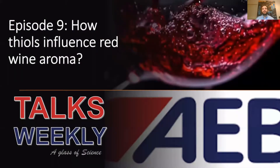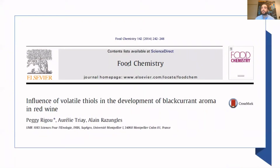Hi everybody, welcome to this new episode of IB Talk. This week we're going to discuss how varietal thiols influence the aromas of red wines. In particular, the article is titled 'Influence of Volatile Thiols in the Development of the Blackcurrant Aromas in Red Wine,' published in the Journal of Food Chemistry in 2014.